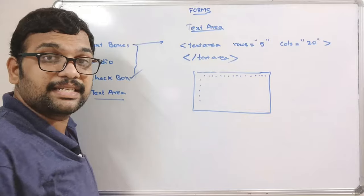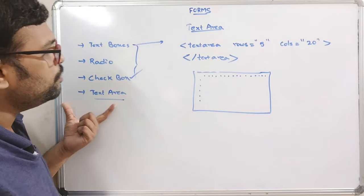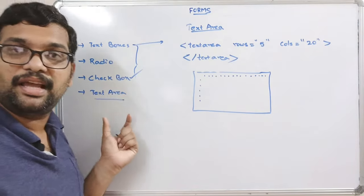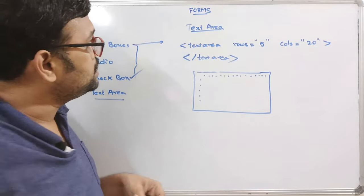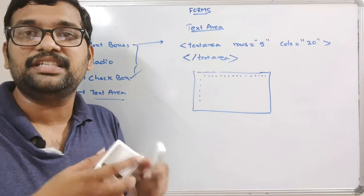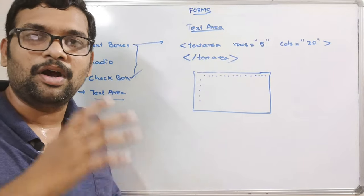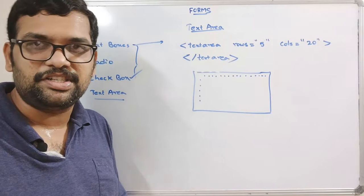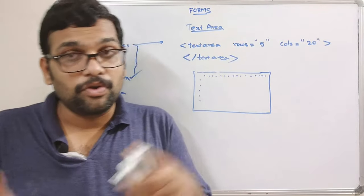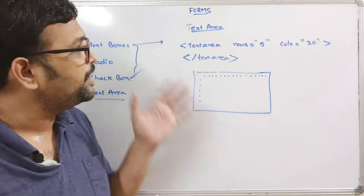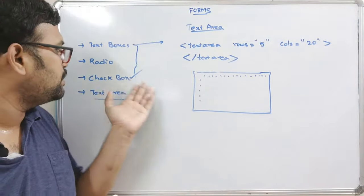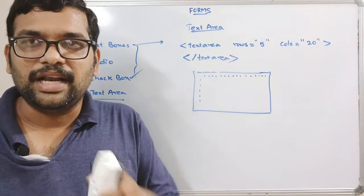This is all about a few form elements — text box, radio button, checkbox, and text area. In the coming sessions we'll see more elements and then create a simple registration form. In the next session we'll see buttons and selection tags. But before that, let's check the implementation of all these things — we'll create text boxes, radio buttons, checkboxes, and text areas. Let's move on to the computer.